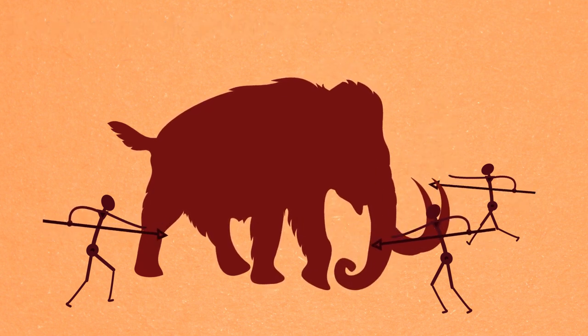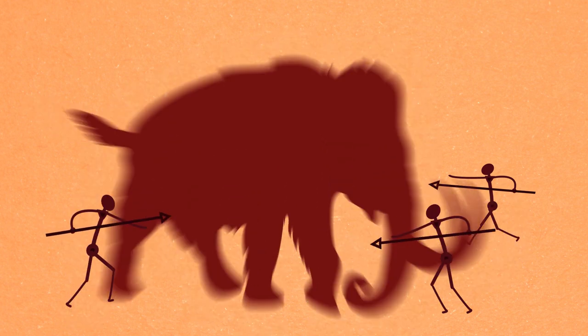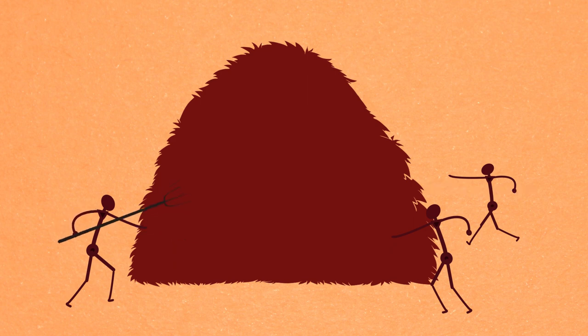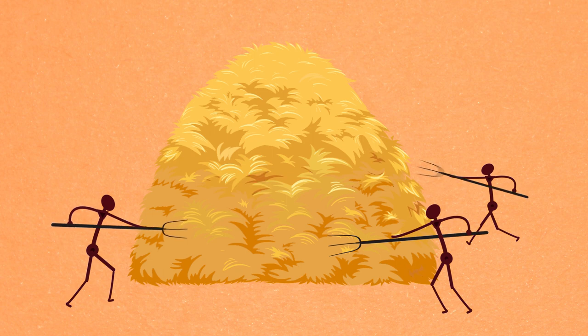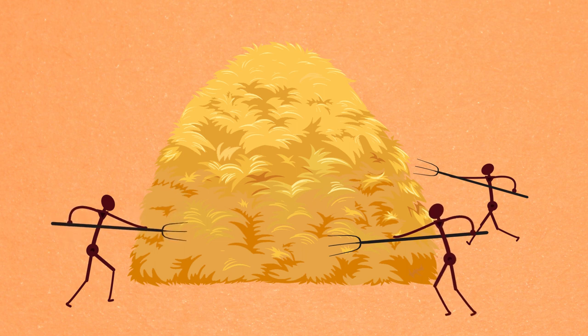Only recently, about 10,000 years ago, which is relatively insignificant in evolutionary time, did we switch to agriculture. This switch has brought an end to how our species has lived for hundreds and thousands of years.